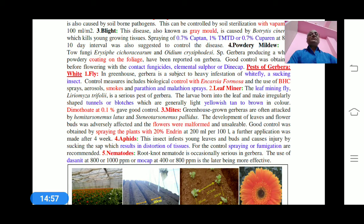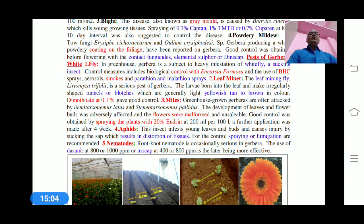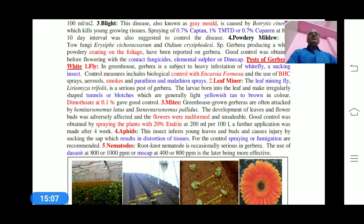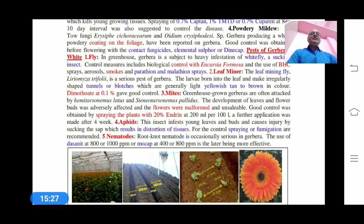Some pests also disturb the plant. There are about five pests or insects. One of the most important is the white fly, which is very dangerous because white flies suck the sap and kill the leaves. It can be controlled by biological control methods using Encarsia formosa and the use of BHC powder sprays, aerosol smokes, or parathion and malathion sprays.